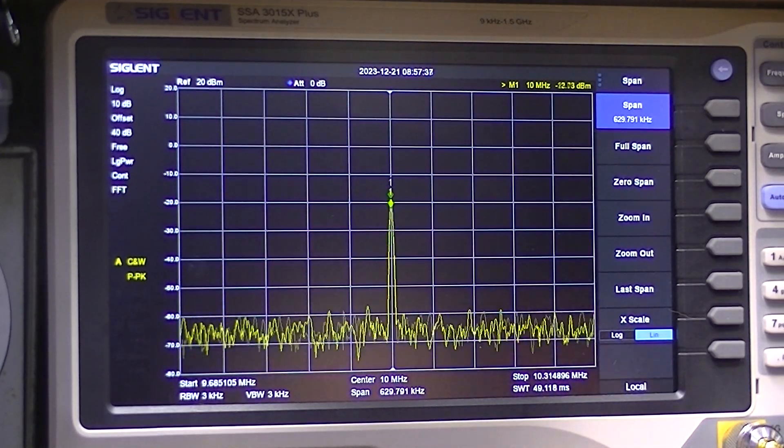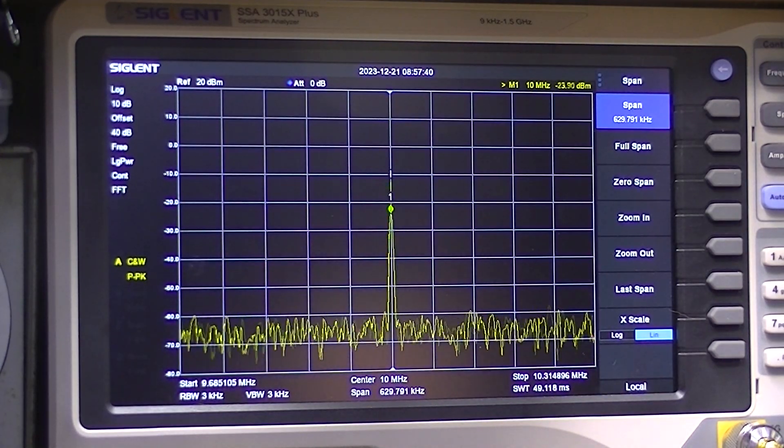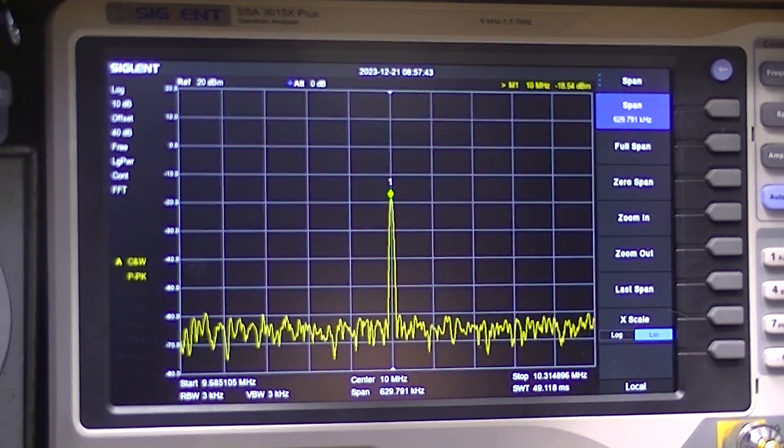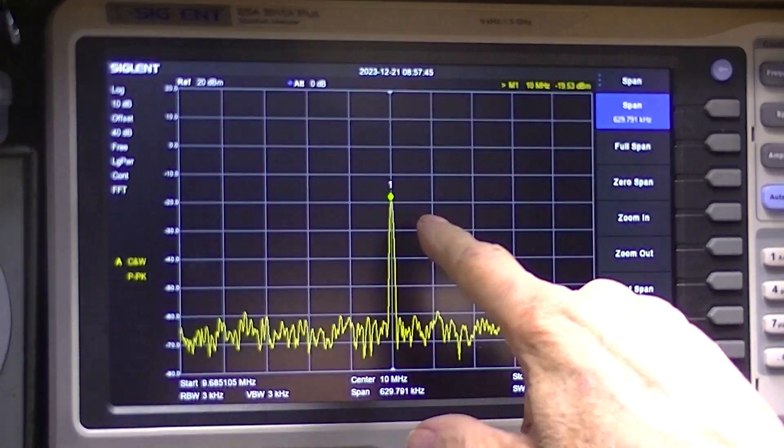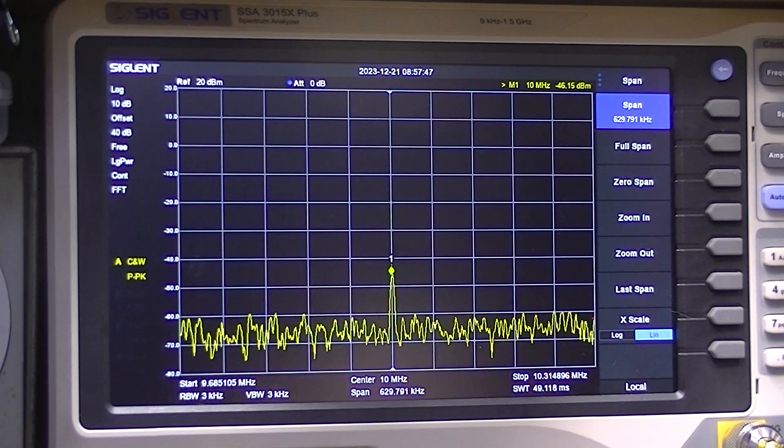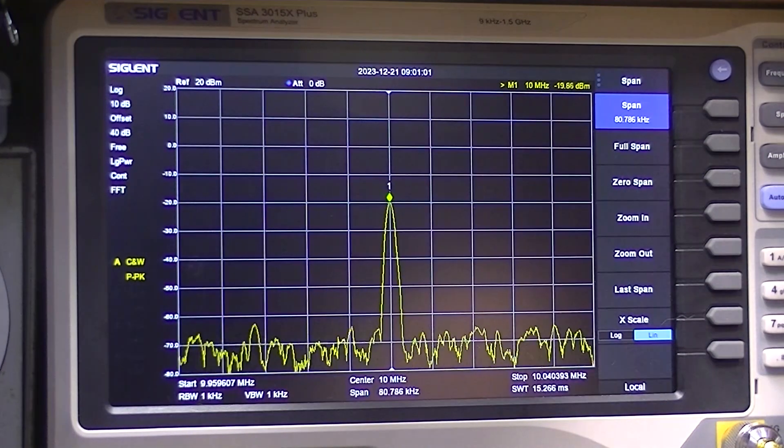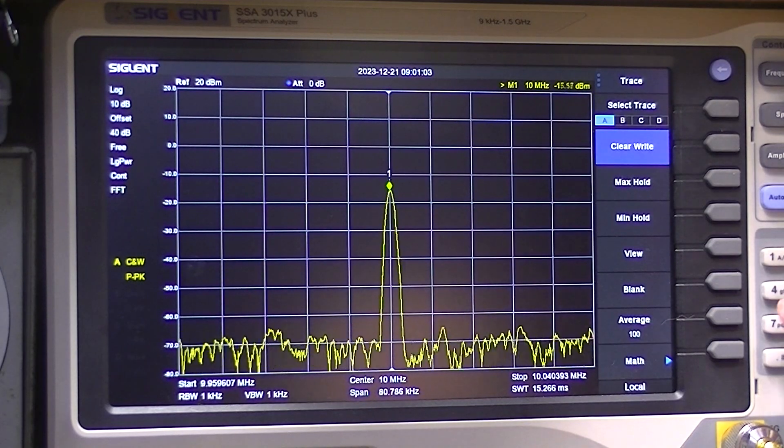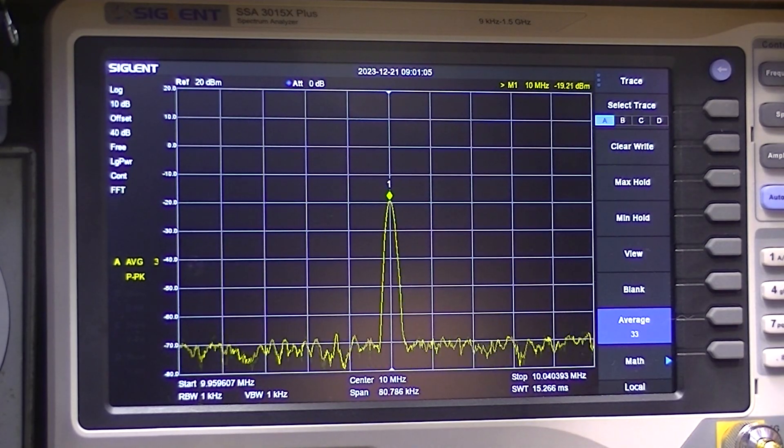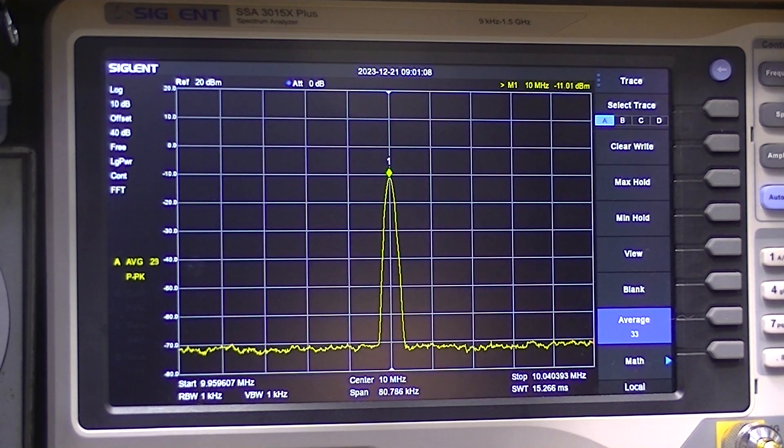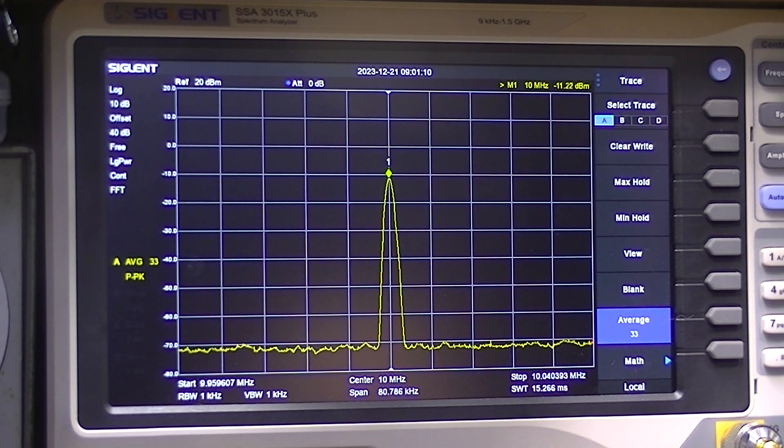Now I've got 40 decibels of attenuation installed. And the output signal is reading minus 20. Averaging on. There we go. Very nice 10 megahertz signal.